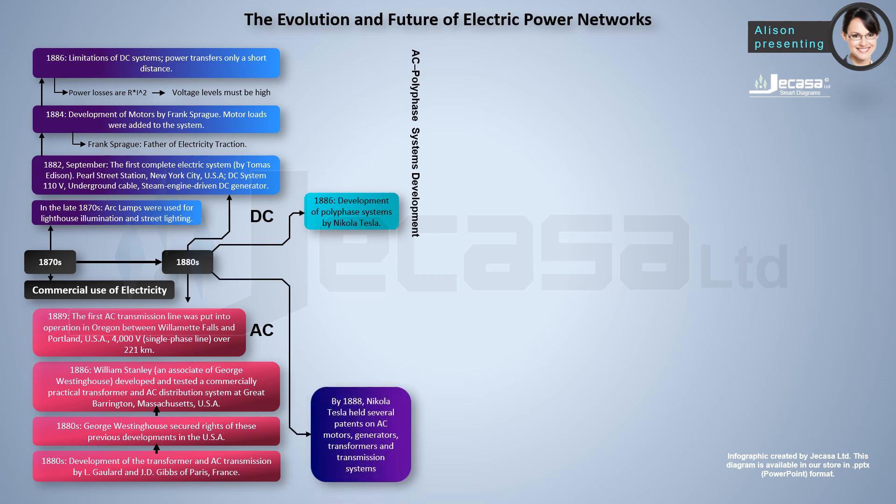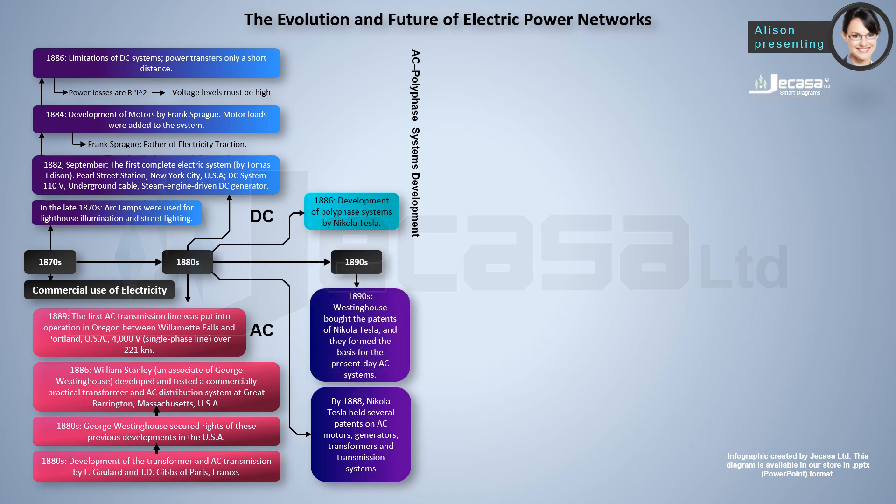By 1888, Nikola Tesla held several patents on AC motors, generators, transformers, and transmission systems. In the 1890s, Westinghouse bought the patents of Nikola Tesla, and they formed the basis for the present-day AC systems.